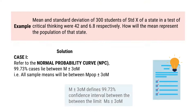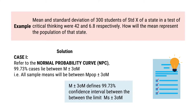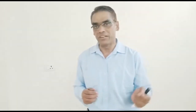Let us discuss this aspect again at different levels of confidence. Case 1: From the normal probability curve, we already know that 99.73% of cases lie between m plus minus 3 sigma m. That is, all sample means will be within the range of population mean plus minus 3 sigma m. So, we have a 99.73% confidence interval between the limits of m plus minus 3 sigma m.